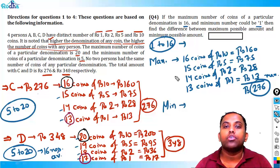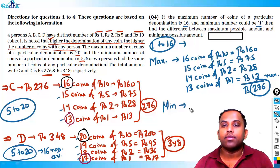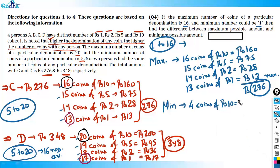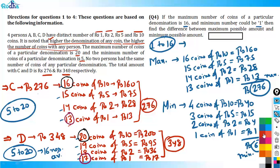For minimum amount, the smallest four values (1–4) are used: 4 coins of rupees 10 (rupees 40), 3 coins of rupees 5 (rupees 15), 2 coins of rupees 2 (rupees 4), and 1 coin of rupees 1 (rupees 1). Sum: 40 + 15 + 4 + 1 = rupees 60. Difference: 276 − 60 = 216. The answer is rupees 216.